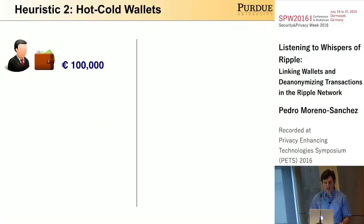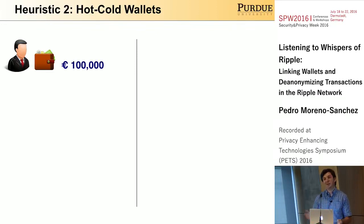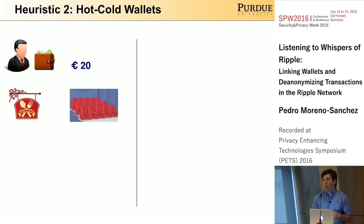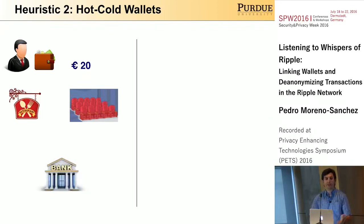The second heuristic captures a really natural activity from our daily lives. How many of you are carrying more than 100,000 euros in your wallets right now? Probably not many. A more realistic case is that we carry around 100 euros and use this wallet to pay for daily activities — for example, to go to a restaurant or pay for a theater ticket. Once we run out of money, we go to the bank, withdraw some money, and put it back in the wallet.